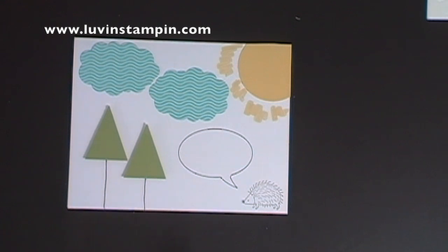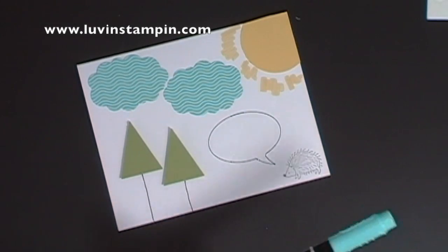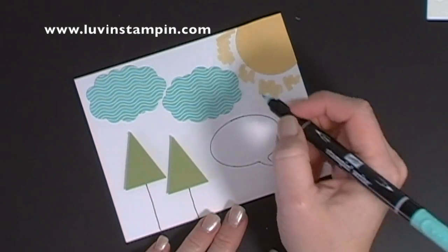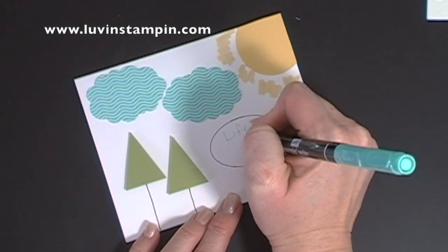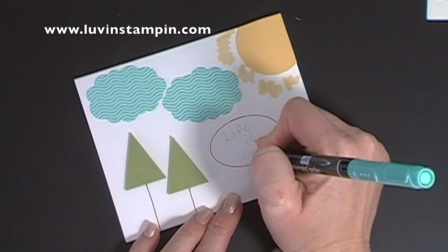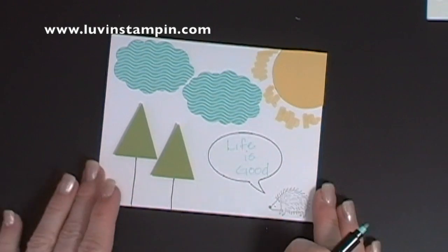And it's a really fine line, which I like, and it's the perfect, it's done perfectly for him. So then instead of stamping on the inside, I went ahead and I used my coastal cabana marker on the fine point end, and I wrote life is good, and I love how it turned out.